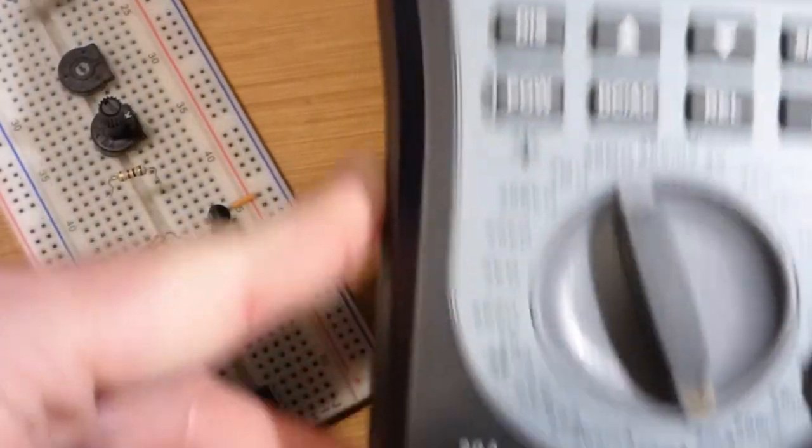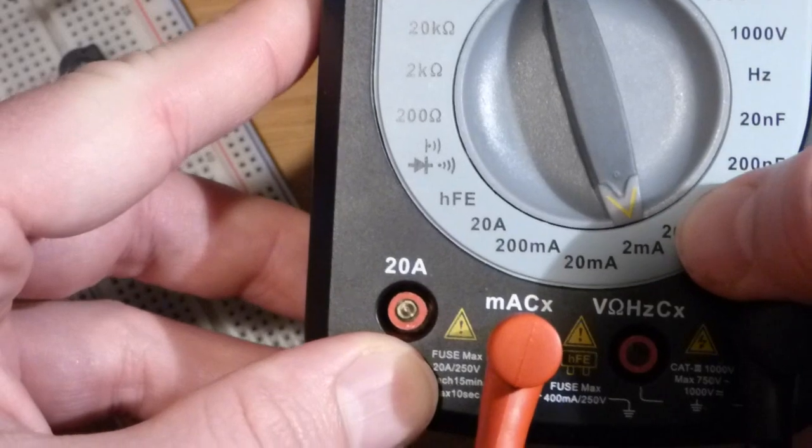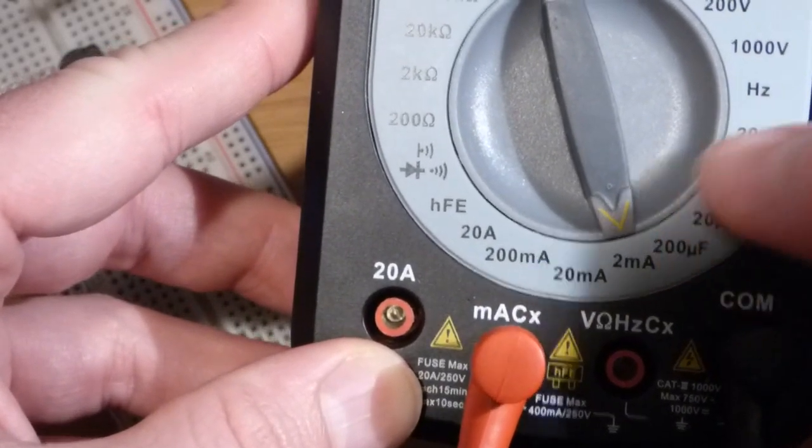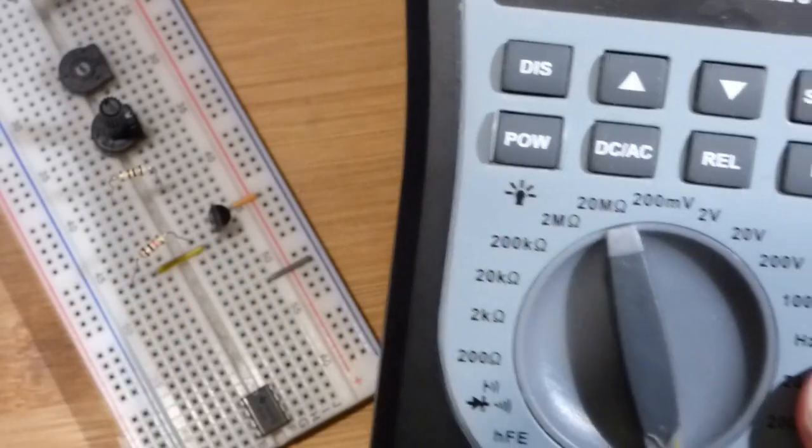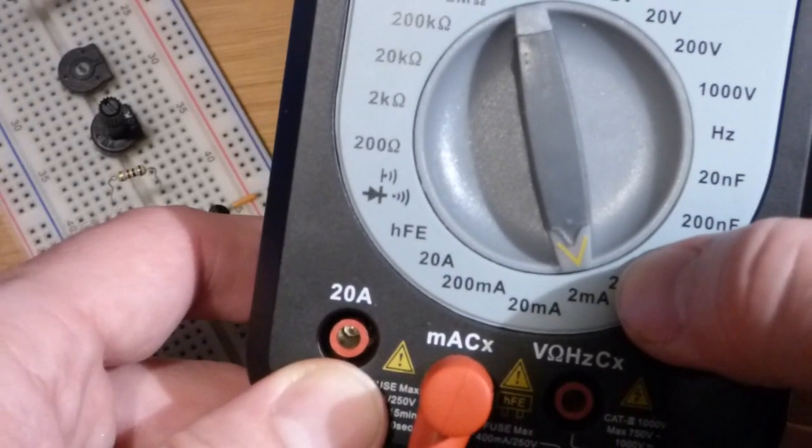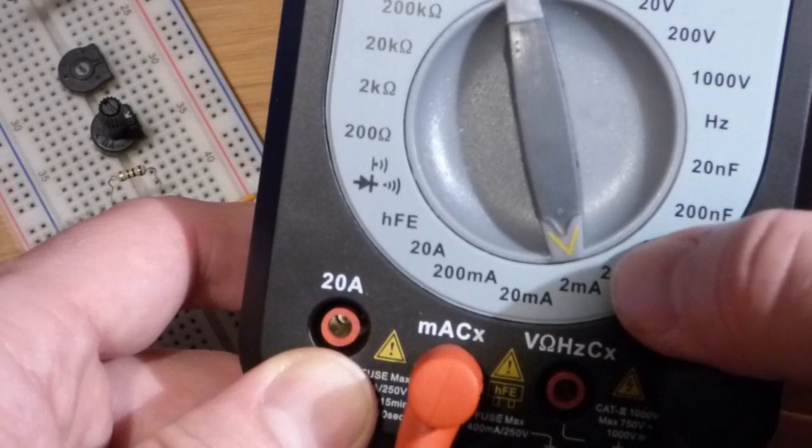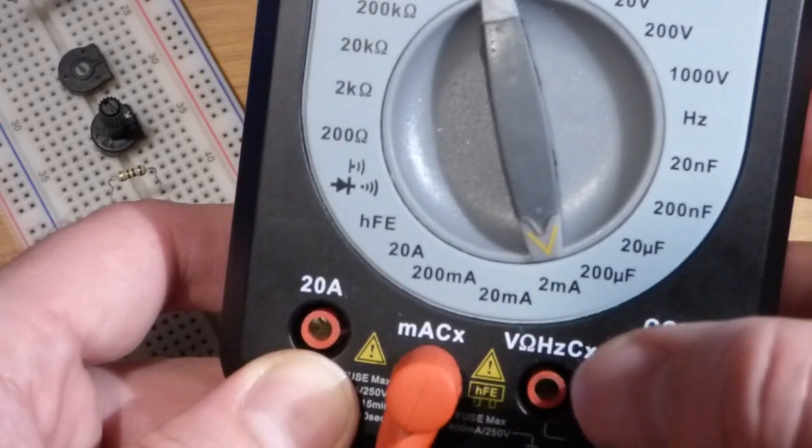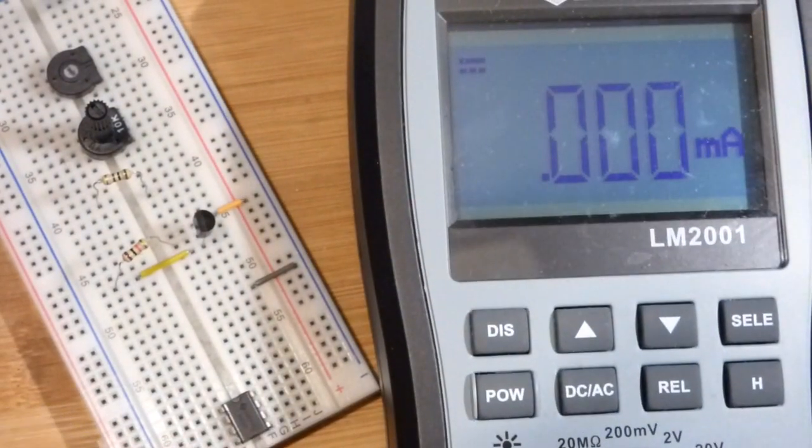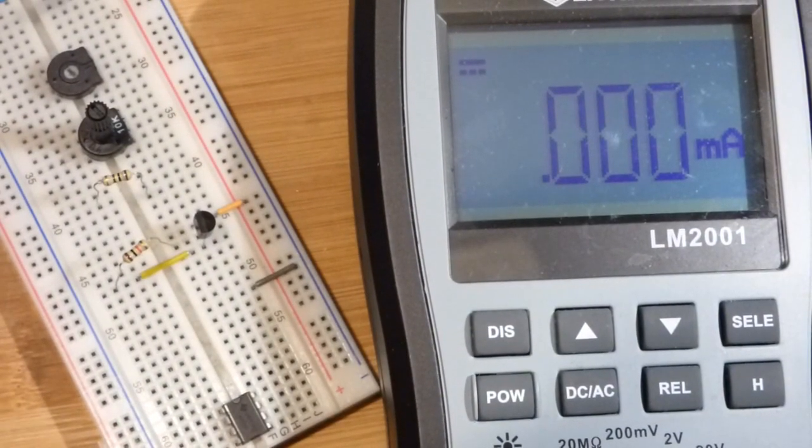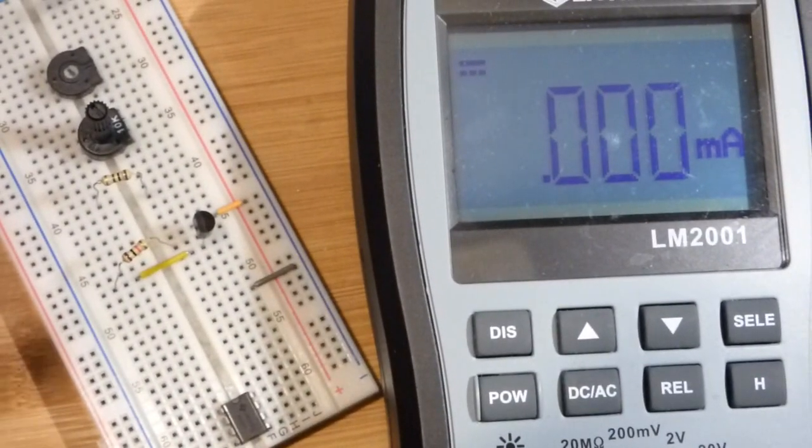I got the meter set to measure milliamps, two milliamp range. We're going to stay below two milliamps. The datasheet says this goes up to 10 milliamps, but we're going to keep it below two milliamps for this video. Make sure you read the datasheet for this. We got the meter in the milliamp plug there and the probes.